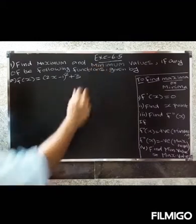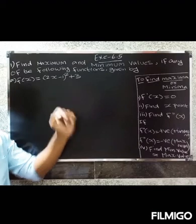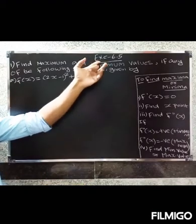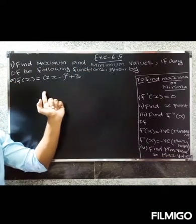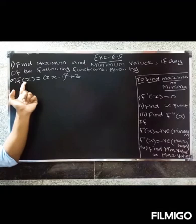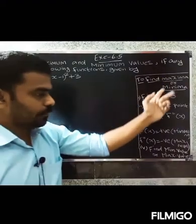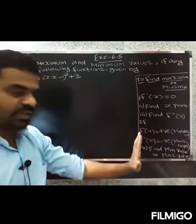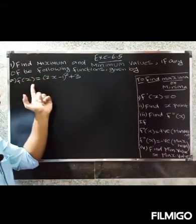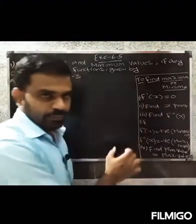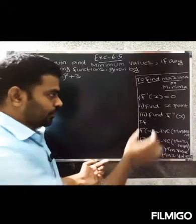Welcome. Exercise 6.5 — Maxima and Minima. This is the introduction. First question: find maximum and minimum values, if any, of the following functions. First question: f(x) = (2x - 1)² + 3. To find maxima or minima, first differentiate f(x) and set f'(x) equal to zero.